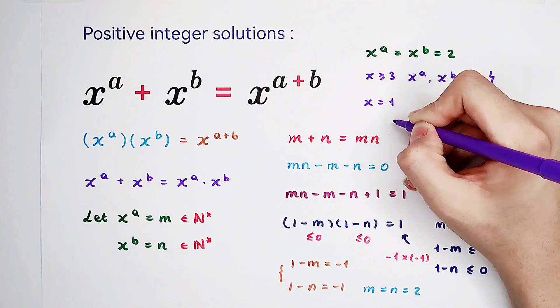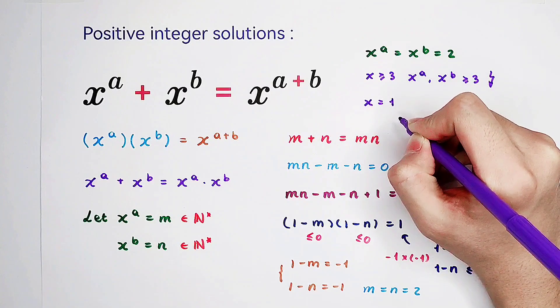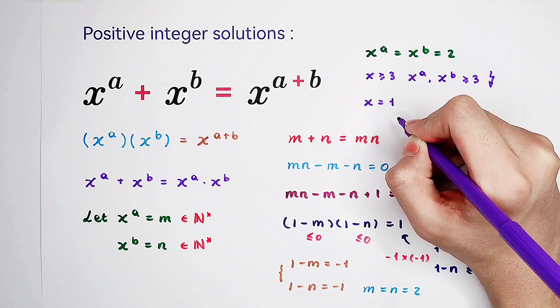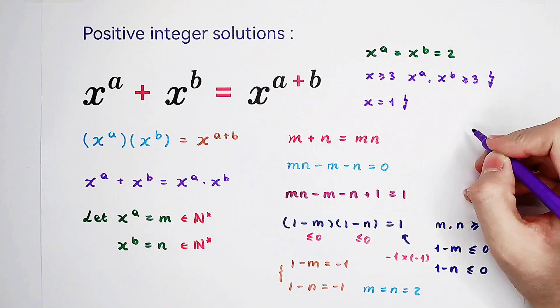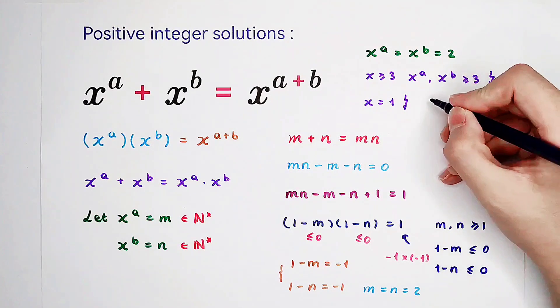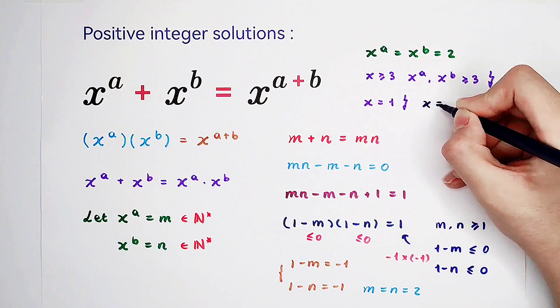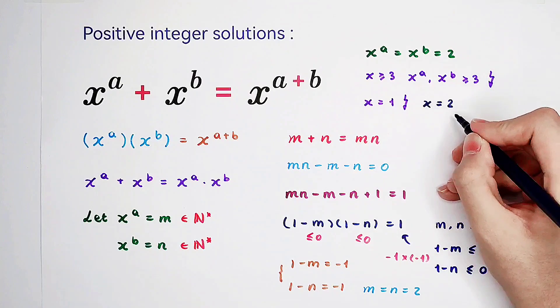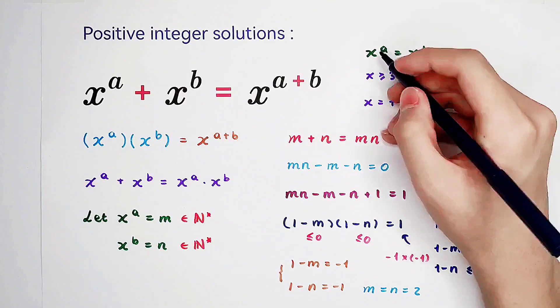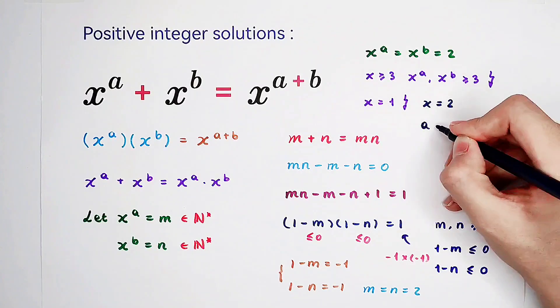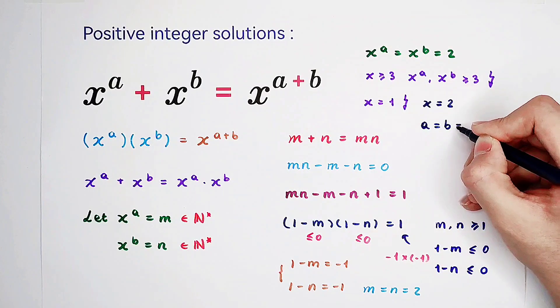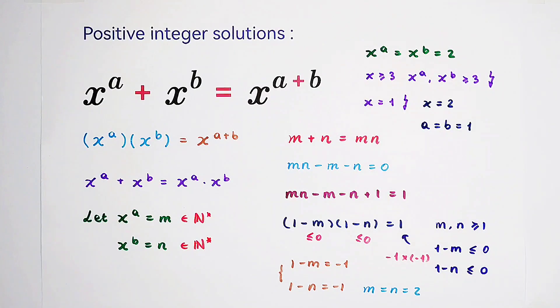If x is equal to 1, 1 to the power of any real number is 1. So it cannot be true. That means the only value for x is x equals 2. And then, if x equals 2, a is of course 1, b as well. So a is equal to b equals 1.